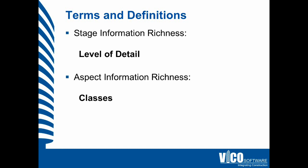The information richness that is targeted per building element category in each of the stages is the level of detail, also referred to as level of development. And the information richness for each of the aspects is referred to as classes — so a class 2 model, a class 3 estimate, and a class 4 schedule.